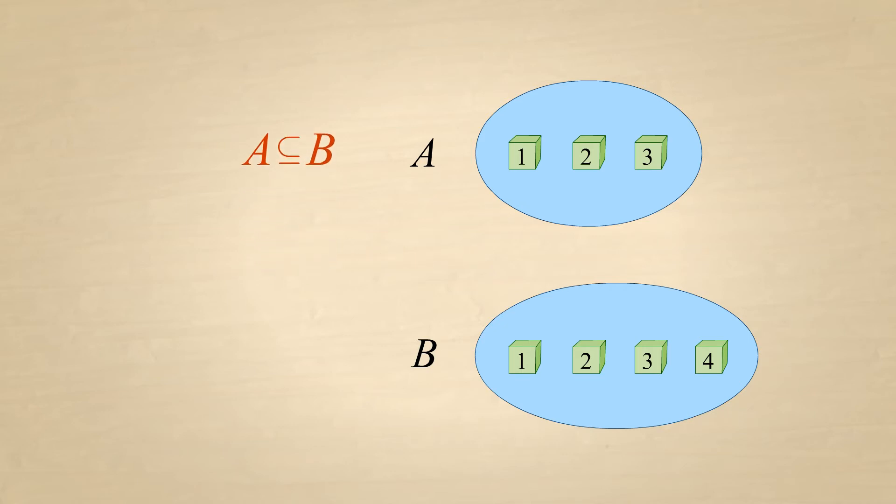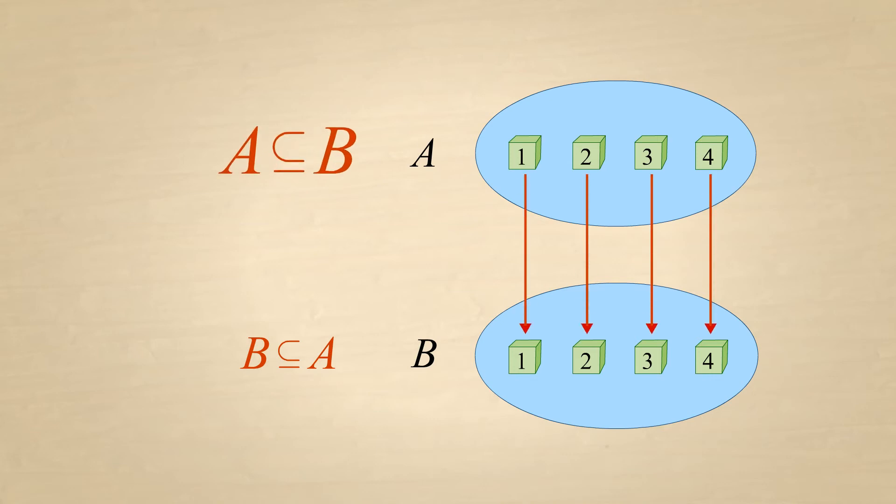If two sets, A and B, are equal, then they are subsets of each other. This is because all the elements of A are members of B, and all the elements of B are also members of A. So any two sets that are equal are subsets of each other.